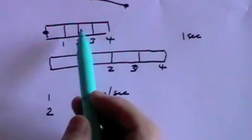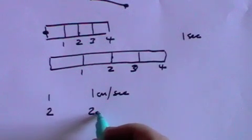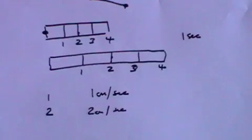Point number two traveled from here to here, a distance of two centimeters in one second. So its speed was two centimeters per second.